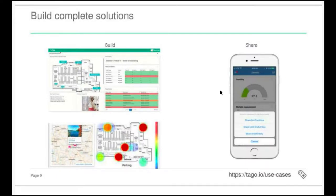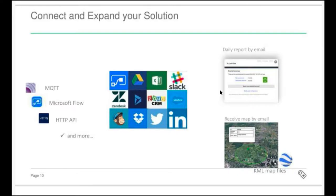Let's say you have 1,000 customers and you want to invite all of them to access your system — you can do this automatically. You can take a look at our website and review the use cases available that are running in real time. We believe we're going to cover most things natively with Tago, but we know there are other applications in the system that are not part of Tago — for that we created APIs able to connect easily with your external systems.